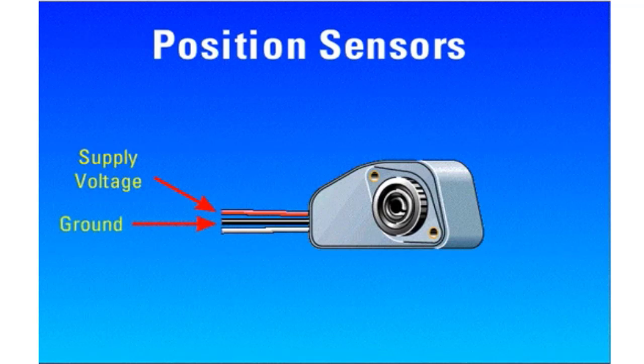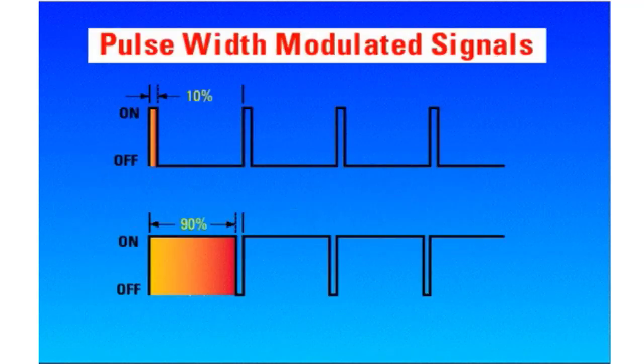The third wire is a signal voltage from the position sensor to the ECM. The accelerator pedal position sensor generates a pulse width modulated signal, which is a square wave. A square wave is either full voltage or zero voltage, on or off.